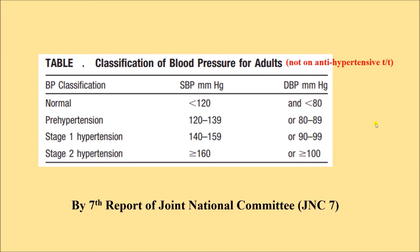With this classification we can determine whether a person is normotensive, pre-hypertensive, or hypertensive, and if hypertensive, whether stage one or stage two. We must also ask whether the person is already on anti-hypertensive medication, because if they are on medication and blood pressure is in normal range, it likely means the drug is working along with dietary and lifestyle modification — so that person is actually hypertensive. That is why this classification is only for adults not on anti-hypertensive medication.